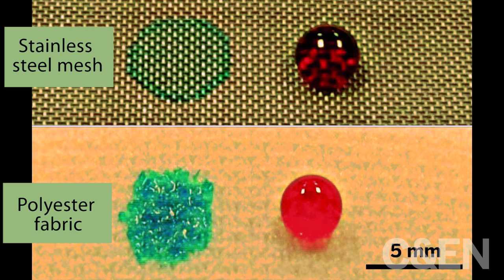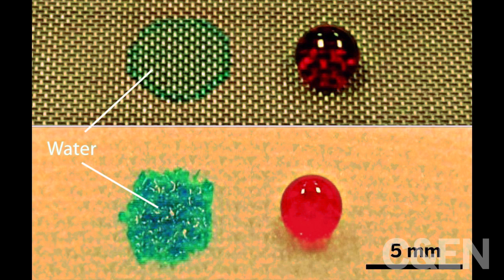Water dyed blue completely wets the surface of the membranes, and rapeseed oil dyed red beads up nearly perfectly.